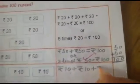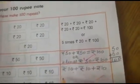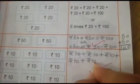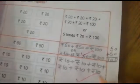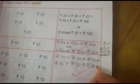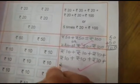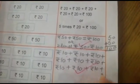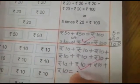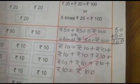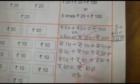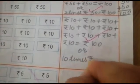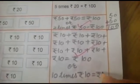We will write: rupees 10 plus rupees 10 plus rupees 10 plus rupees 10 plus rupees 10 plus rupees 10 plus rupees 10 plus rupees 10 plus rupees 10 plus rupees 10 — that is 1, 2, 3, 4, 5, 6, 7, 8, 9, and 10 is equal to rupees 100. Or we can write: 10 times rupees 10 is equal to rupees 100.